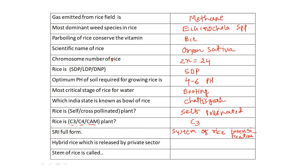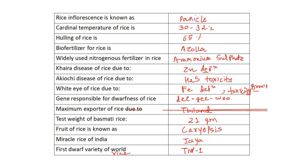The hybrid rice variety released by the private sector is PHB 71 — this is the first hybrid rice variety released by the private sector. The stem covering of rice is known as the hull, and it is made up of lemma and palea.